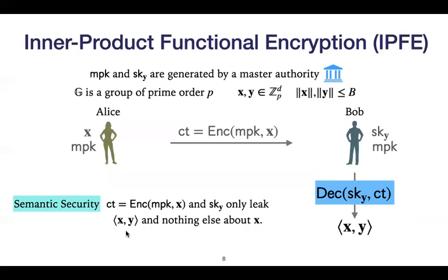In inner product functional encryption, Alice has a vector x which she sends to Bob as an encryption. Bob's secret key is associated with some vector y. Both x and y live over Z_p to some dimension d. When Bob decrypts, he gets the inner product of x with y. In this paper, we are interested in bounded inner product, so the case where the two norms are bounded. We work over a group of prime order p.